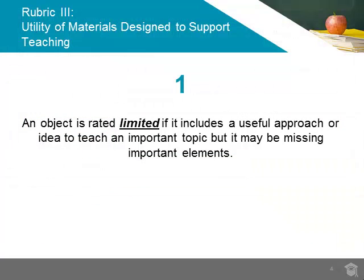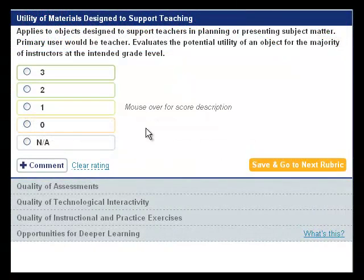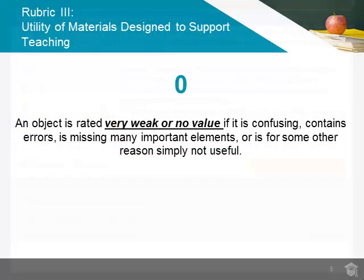You may find an object that includes a useful approach or idea to teach an important topic, but it may be missing important elements. For example, if directions for some parts of the lesson are missing or unclear, then the object would have a limited value, a 1 rating, for the utility of materials to support teaching.